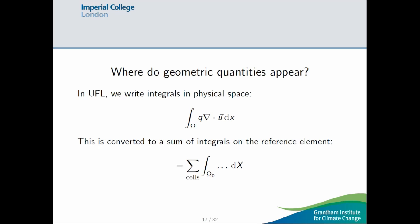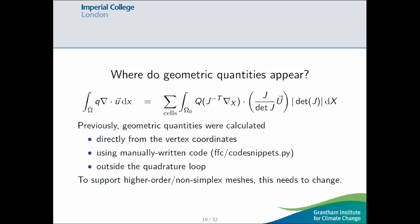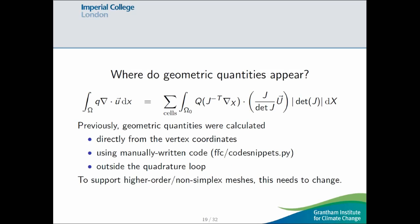And where do we use these quantities? Well, in UFL, we write integrals in physical space. So, this is one of the blocks of the mixed Helmholtz system we saw before. And we need to convert this thing into integrals on the reference element. So, to give a bit more detail, if we define J to be the Jacobian of this coordinate transformation, then there's basically four things. The integration measure picks up this factor of absolute value of det J. The derivatives with respect to the physical coordinate become derivatives with respect to the reference coordinate by the chain rule.